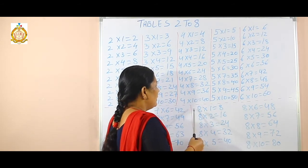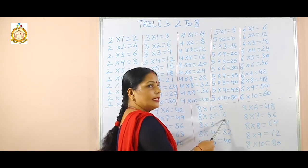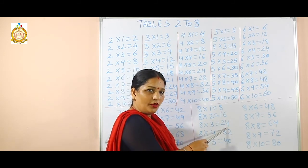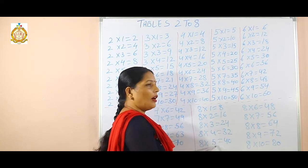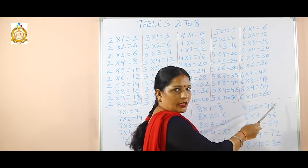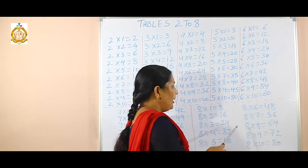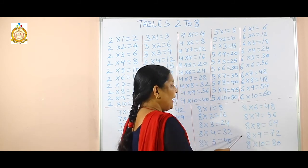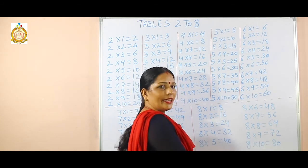Next, 8 ones are 8, 8 twos are 16, 8 threes are 24, 8 fours are 32, 8 fives are 40, 8 sixes are 48, 8 sevens are 56, 8 eights are 64, 8 nines are 72, and 8 tens are 80.